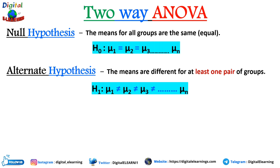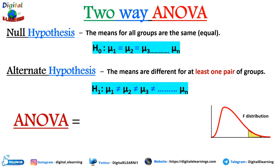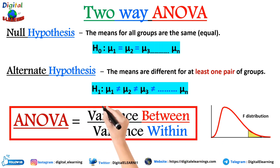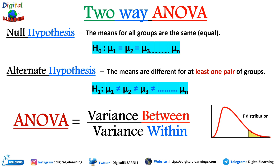If we want to compare only two groups, please use the t-test. ANOVA uses the F-distribution to determine statistical significance. We calculate ANOVA as variance between divided by variance within. The F-test compares the variance in each group mean from the overall group variance. If the variance within groups is smaller than the variance between groups, the F-test will find a higher F-value, indicating a higher likelihood that the observed difference is real and not due to chance.